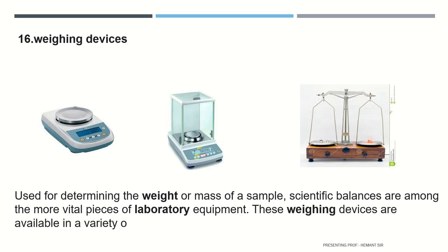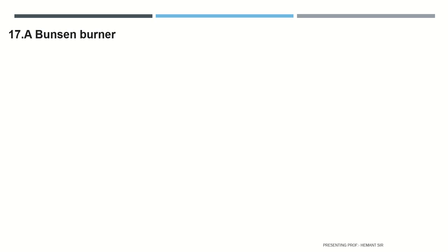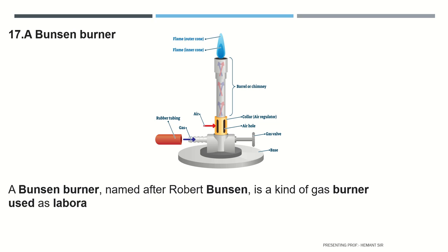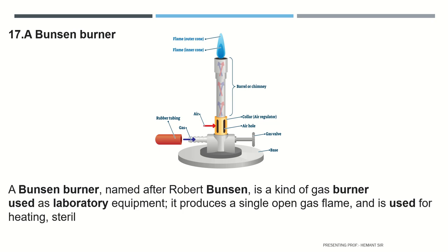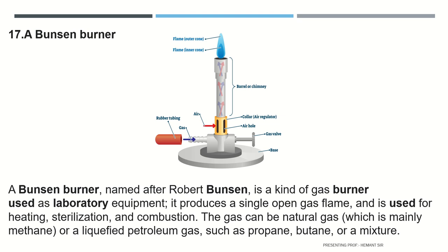A Bunsen burner, named after Robert Bunsen, is a kind of gas burner used as laboratory equipment. It produces a single open gas flame and is used for heating, sterilization, and combustion. The gas can be natural gas, which is mainly methane, or a liquefied petroleum gas such as propane, butane, or a mixture.